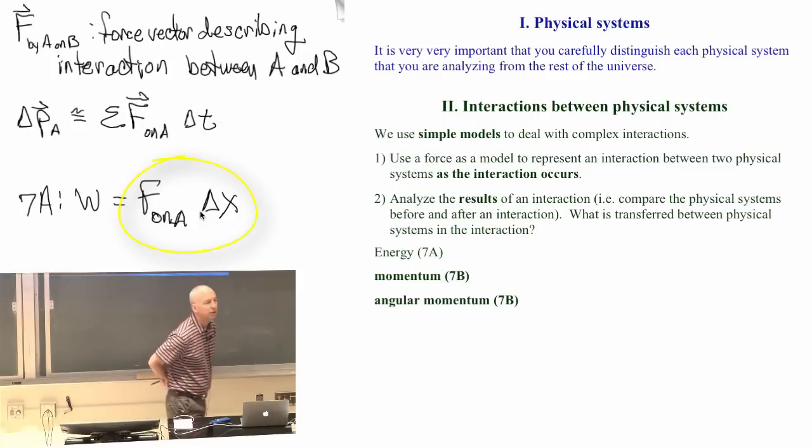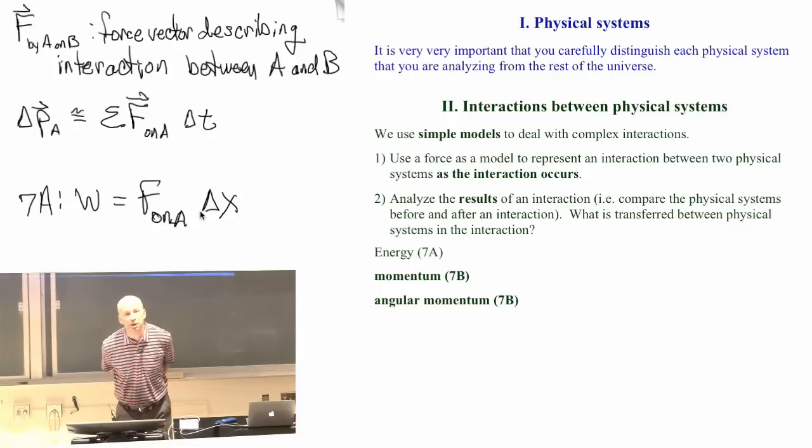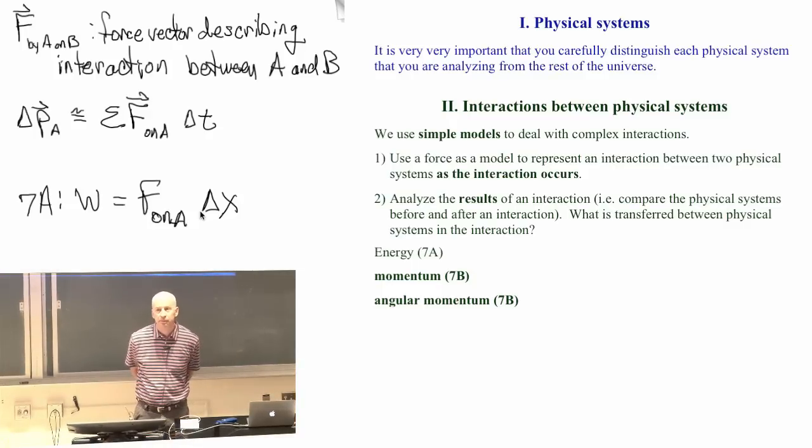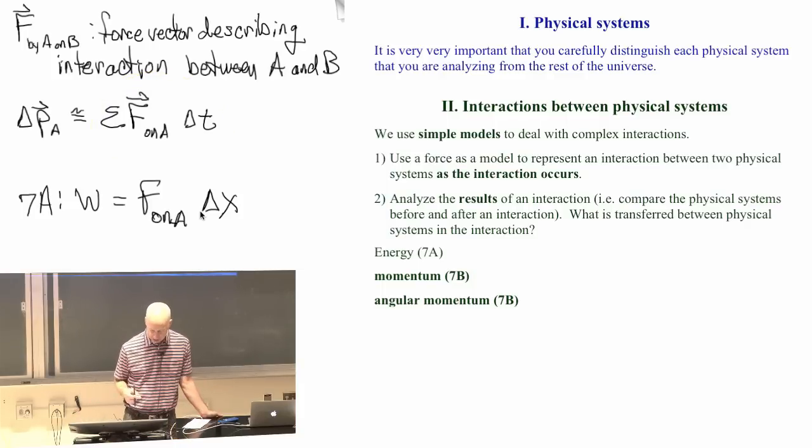We actually don't have a special unit for momentum. So newton seconds is fine. Kilograms meters per second turns out to be the same thing. The momentum is mass times the velocity, so kilogram meters per second is the unit for that.